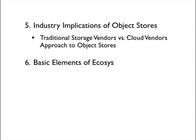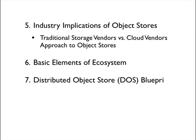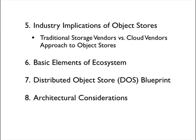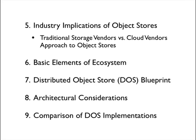Object stores don't exist in isolation, so we'll take a look at the ecosystem involved. Then we begin to get into some technical detail, starting with a basic blueprint of distributed object store technology at both hardware and software levels, and then include architectural considerations. In the end, every design choice you make has pluses and minuses, so we'll look at what some of those are, and finish by looking at some existing implementations and doing a compare and contrast.